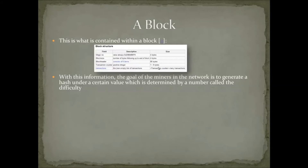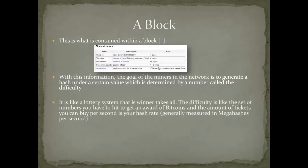Because we can't predict the hash output, we start at the lowest nonce possible — one — and iterate by brute force until we discover the value. Think of it like putting something into a machine that outputs a random value, and you hope that value is less than some predetermined number called the difficulty. It's kind of like a lottery system — that's another way people describe it — and just like a lottery, it's winner takes all.